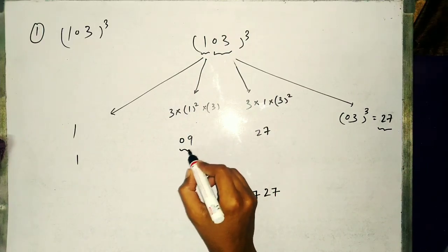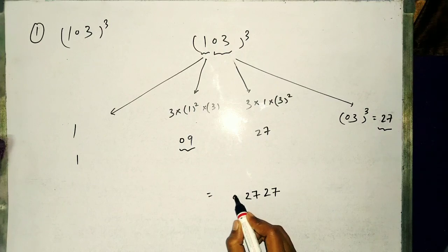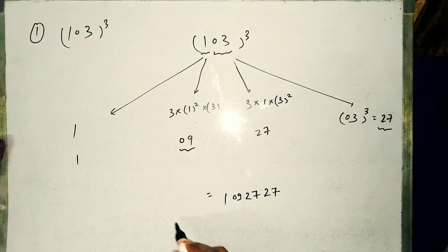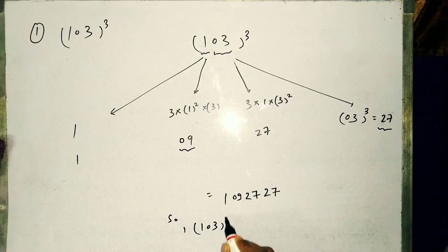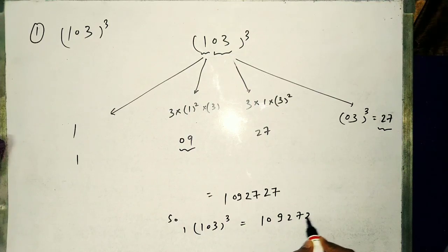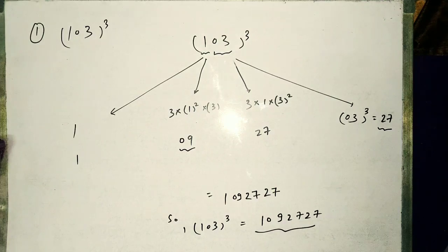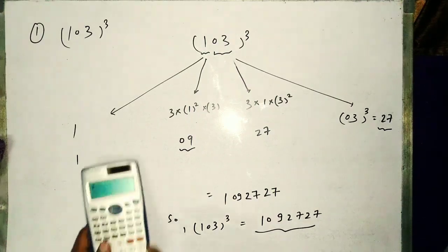We have taken 2 digits in primary condition so we will take 2 digits in this case. 27 and this 27. This is 1 digit so we can take 10, then 09 and 1.